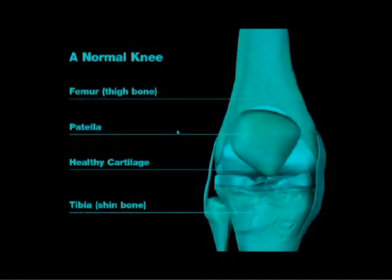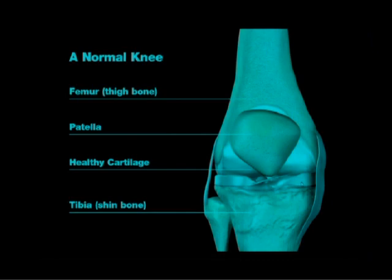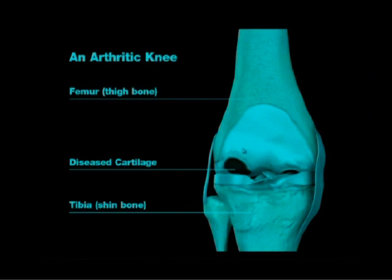Let's look at a schematic of a normal knee. This right here is your femur bone and this right here is your tibia, also known as the shin bone. If you look at the white matter in between the two bones, that's the cartilage. There are two forms of cartilage: hyaline cartilage, which is the cartilage on the bone, and then there's the meniscus, which is in between the two bones.